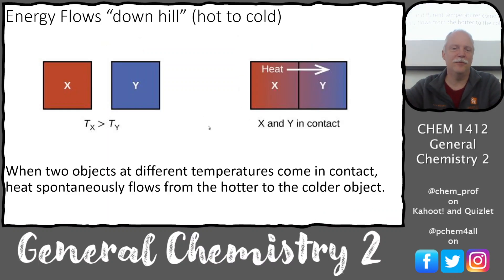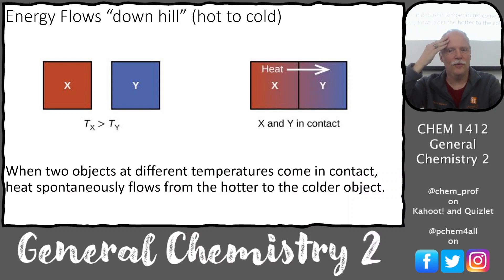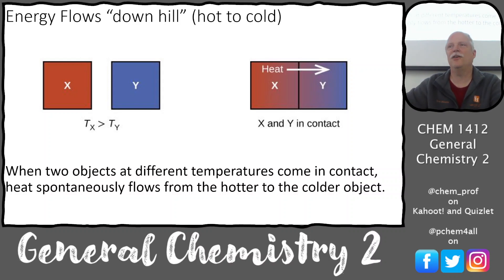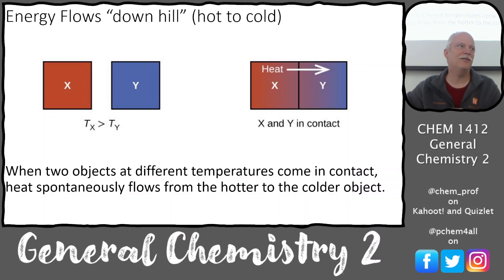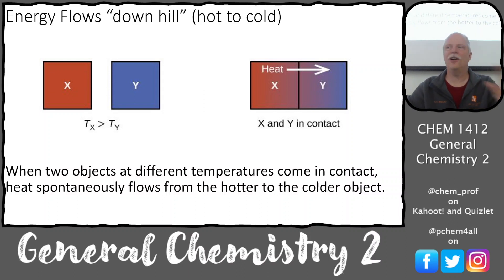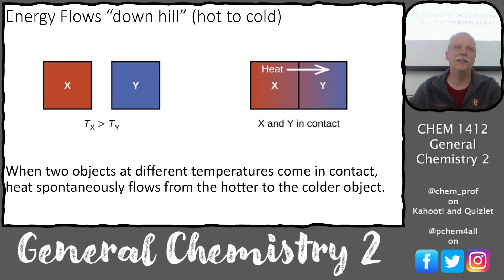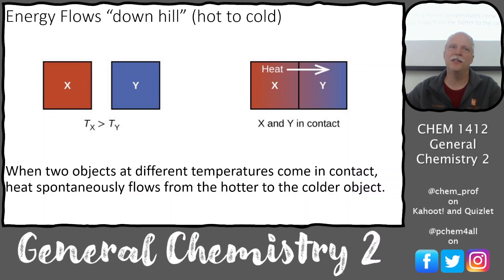Energy flows downhill just like balls on a hill — heat flows from hot to cold. When you feel a cold surface, it's making you cold by your heat getting sucked out. You're not detecting cold — you're detecting the loss of heat. Your nerve endings are sensing heat flowing out of the body, signaling that they're having a hard time keeping your hand at body temperature. So coldness is really a lack of heat.